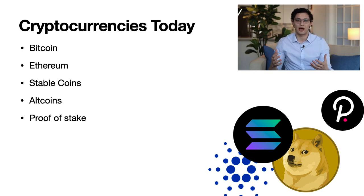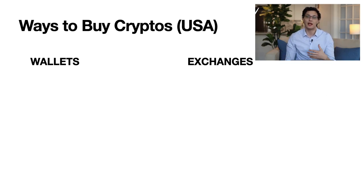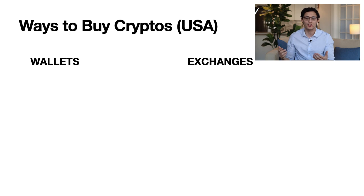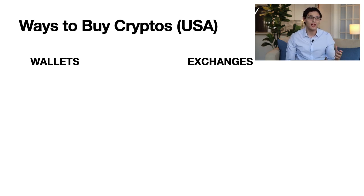Now let's get into ways you can actually buy crypto. There are basically two ways to hold crypto: in a wallet or with an exchange. All crypto in the world is stored in some kind of wallet, which has a public key — where people can send you crypto, kind of like an address — and a private key, which acts like the key that unlocks your wallet. Anyone who owns that private key effectively owns all of the crypto in that wallet, so it's extremely important that you keep it secret. Even within wallets, there are different kinds: hot wallets, which are actively connected to the internet and allow you to trade in and out quickly, and cold wallets, which are completely air-gapped and disconnected from the internet.